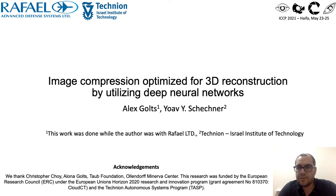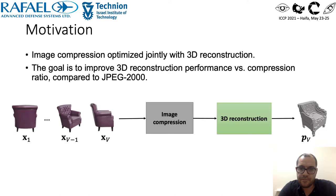Hi, I'm Alex Golds and I'll present joint work with Professor Joab Schechner on image compression optimized for 3D reconstruction by utilizing deep neural networks. Consider 3D reconstruction for multiple view images which also need to be compressed beforehand. We propose joint learning of these two tasks. We'll show that our approach improves 3D reconstruction versus image compression rate as compared to when compression is done using JPEG 2000.